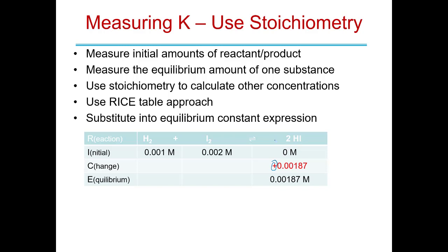The change for HI is simply what you add to 0 to get 0.00187. Now we use stoichiometry to find the changes for the other substances. The change in HI tells us we created 0.00187 moles of HI per liter.